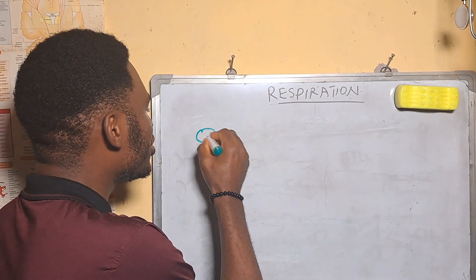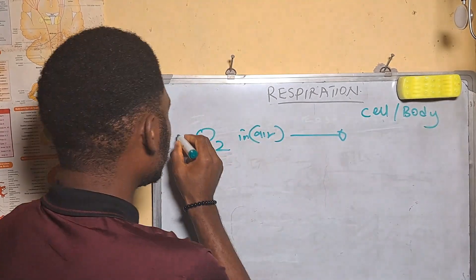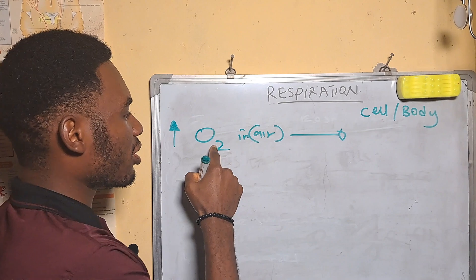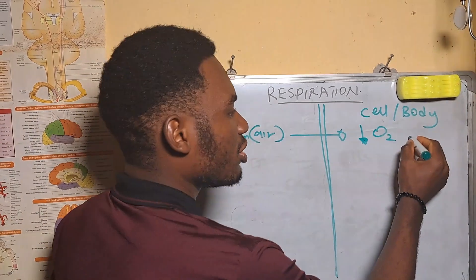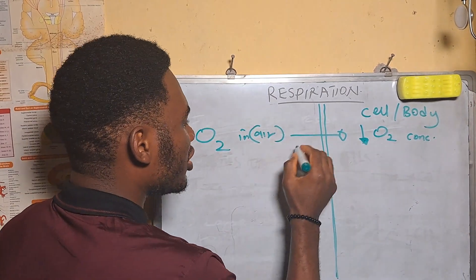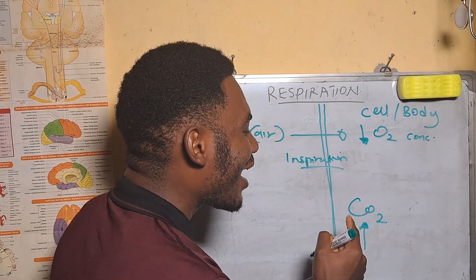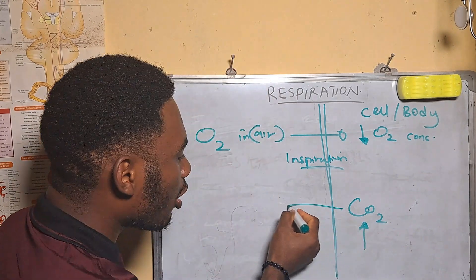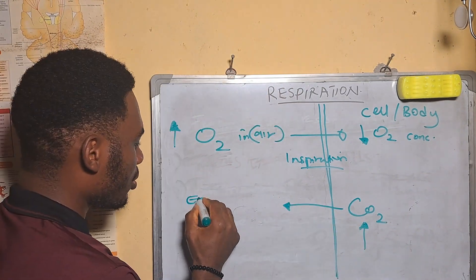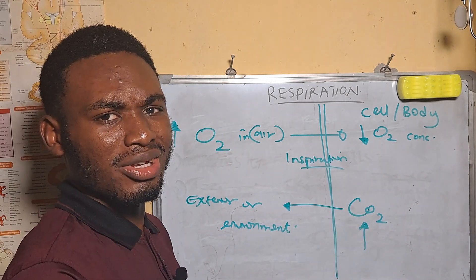In respiration, gases move from a region of high concentration to a region of low concentration. So oxygen in air, which has a high concentration, moves into the body or cell because inside the cell there is a low oxygen concentration — this is inspiration. Then carbon dioxide, which has a high concentration inside the cell, tends to move out to the exterior or environment — this is expiration.